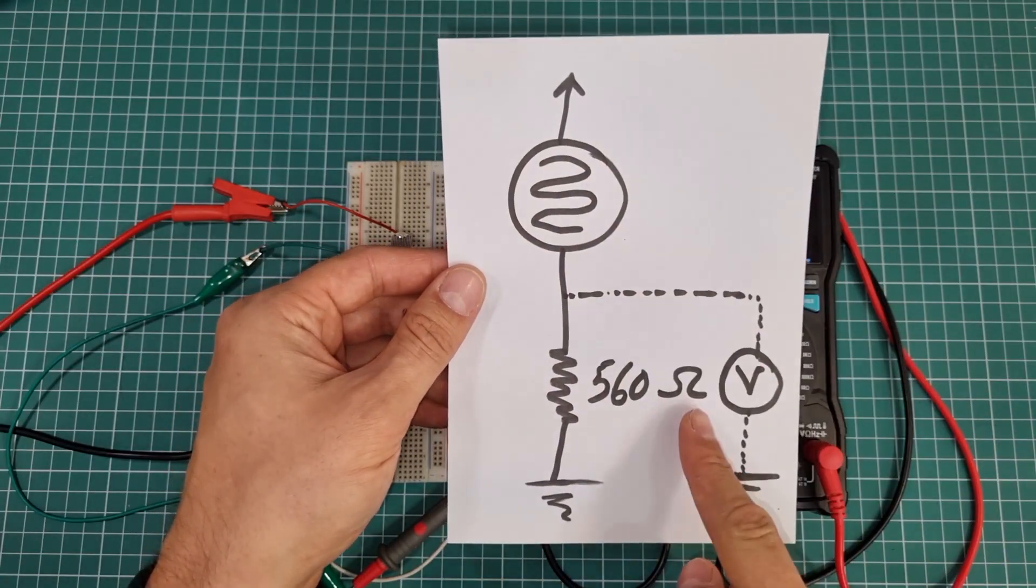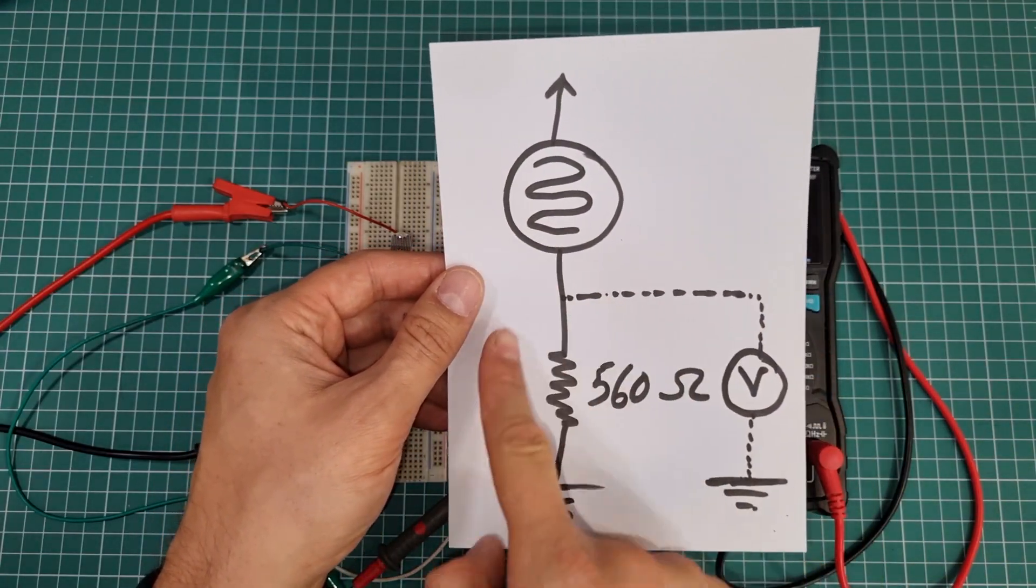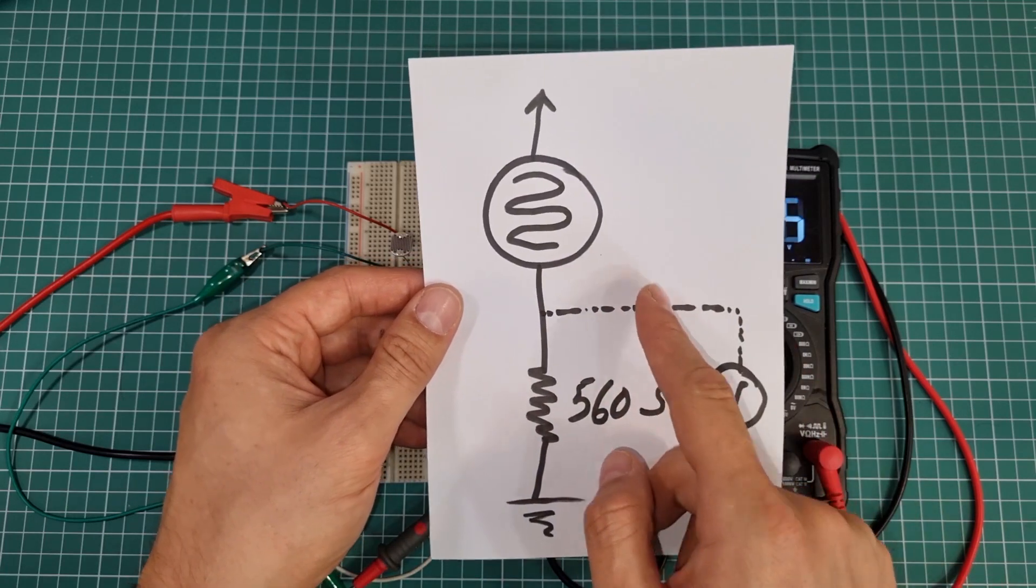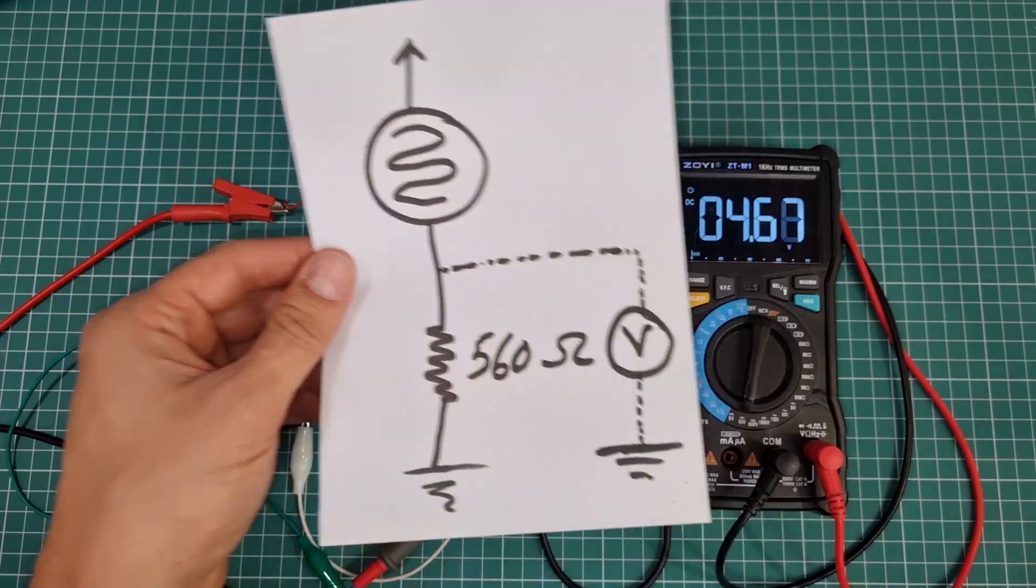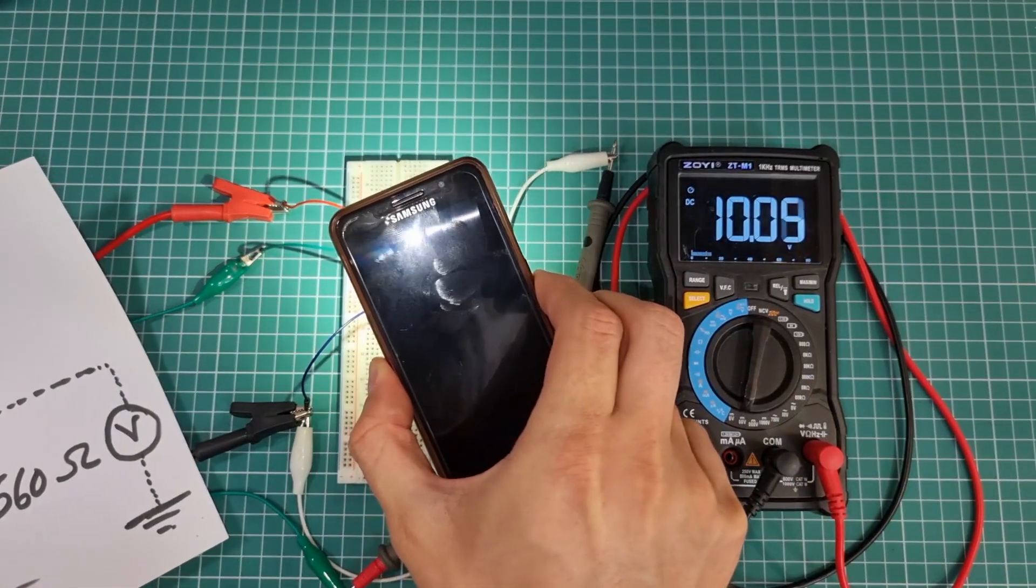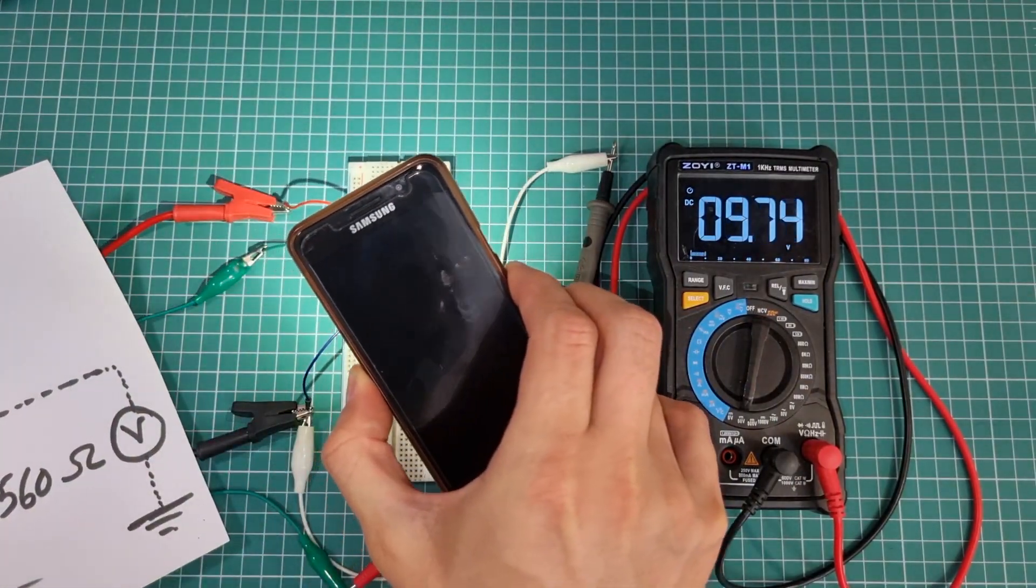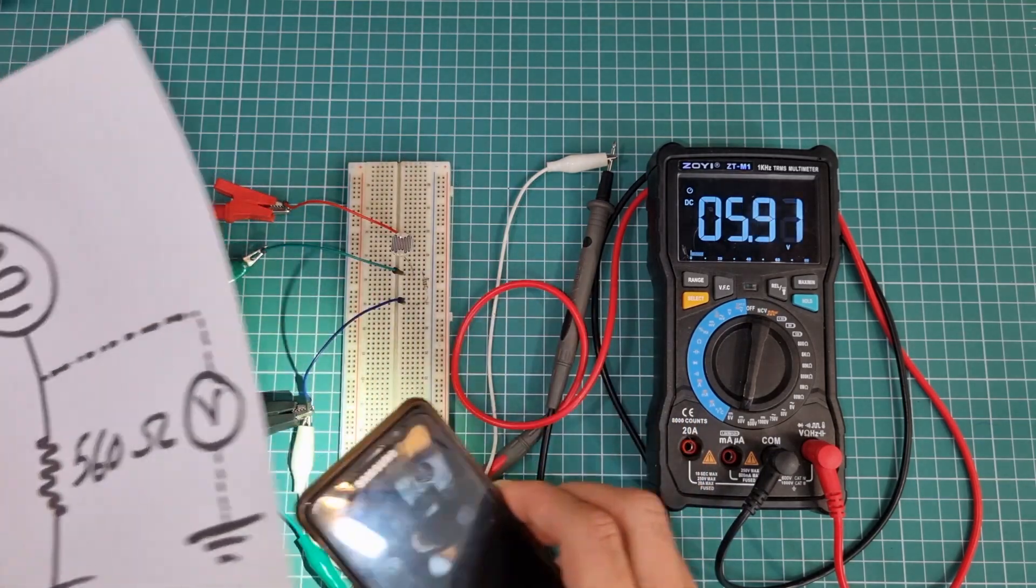Second example is this: LDR in series with a resistor. With illumination change in the ambient, the voltage here at this point will change. Look here, 10 volts, 5 volts, 10 volts, 5 volts.